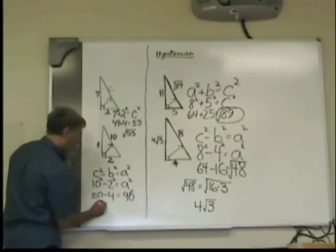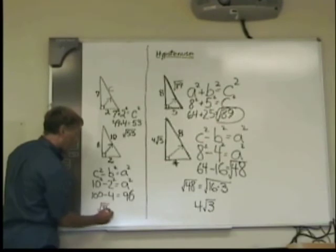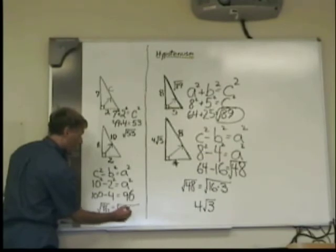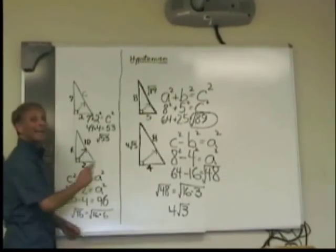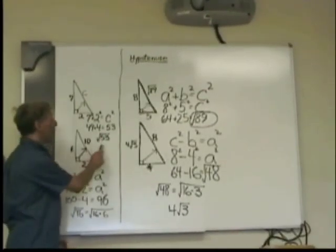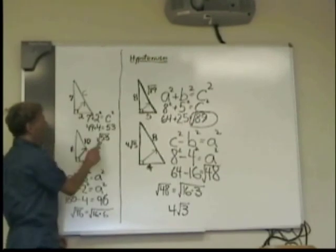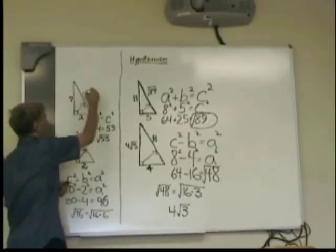Which is 10 squared minus 2 squared equals A squared. 100 minus 4 equals 96. I take that 96 and I can simplify it because that is 16 times 6. And so the answer for your first one, this hypotenuse, would be radical 53.